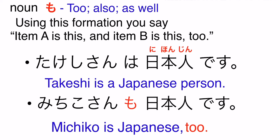So kung mapapansin niyo, yung dalawang sentence natin is halos magkapareho lang. Pero yung first sentence natin is gumamit tayo ng particle wa to say that Takeshi is a Japanese person. But in our second sentence, we use particle mo to say that Michiko-san has also the same property as Takeshi-san, or to say that Michiko-san is also Japanese.